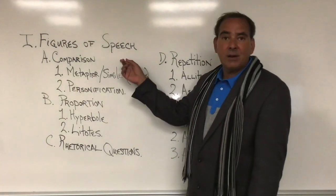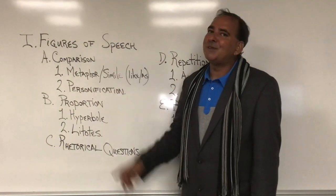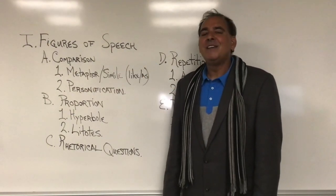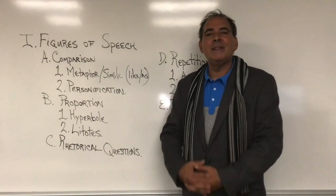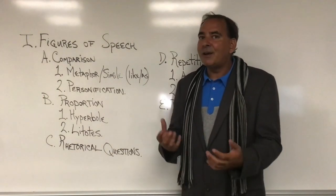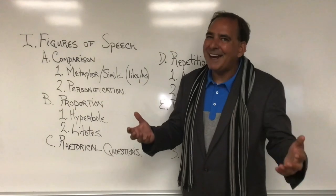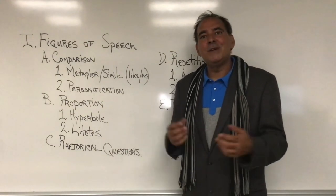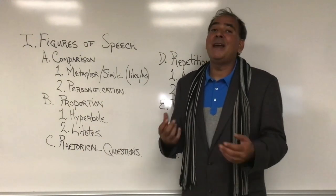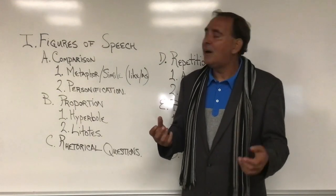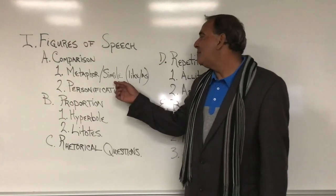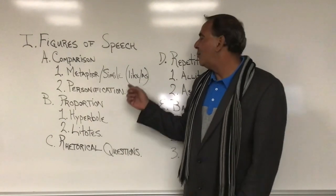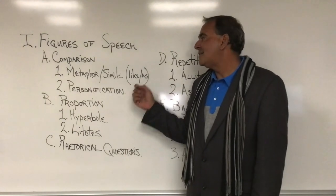I'm sure most of you folks have probably heard about metaphors and similes — they're comparisons between two unlike objects. So as a metaphor goes, I could say 'you are a shining star,' which is a comparison between you and a star. Or I could say 'you shine as bright as a star,' which would be a simile since it uses the word 'as.' Please note that all similes use either the word 'like' or the word 'as.'